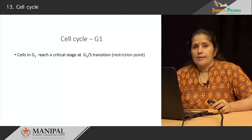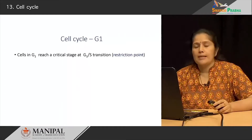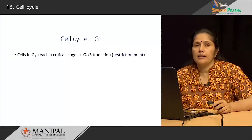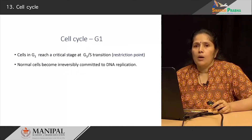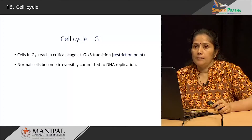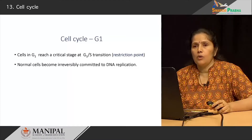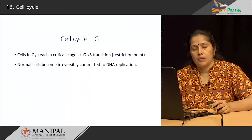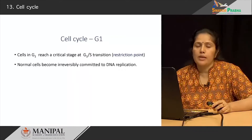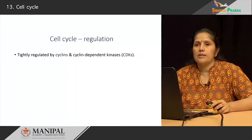As cells are in the G1 phase they reach one critical point known as the restriction point at the G1-S transition. At this point the cell becomes irreversibly committed to its DNA undergoing replication — after this there is no going back, and the cell must enter the next phase.